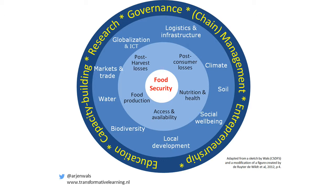Can agriculture be climate smart — what does that mean? How do we improve quality of soils, the well-being of people, and how are we mindful of local development, biodiversity, water, markets, and trade? On the outside there are all kinds of mechanisms that can help organize and improve interaction: governments, chain management, entrepreneurship, education, capacity building, research — they are all available to help do that.